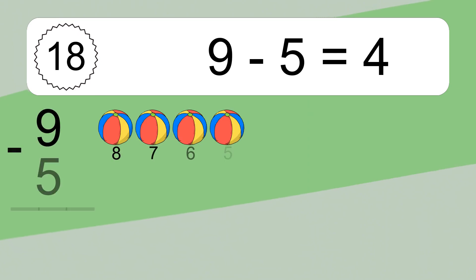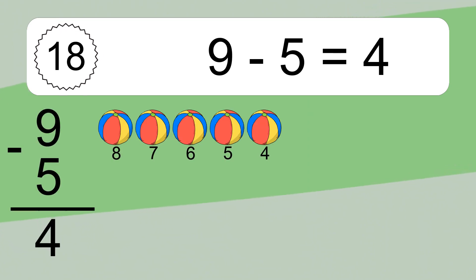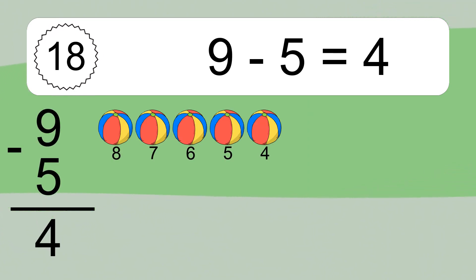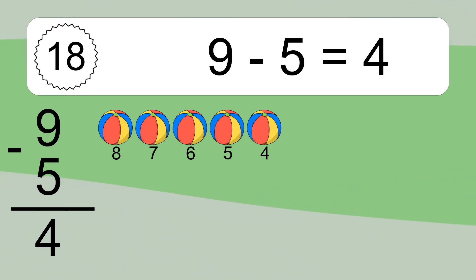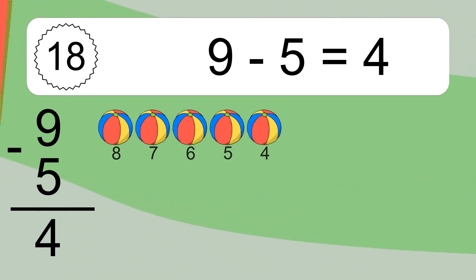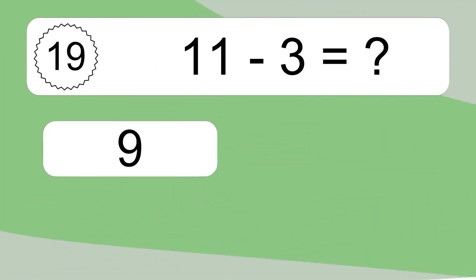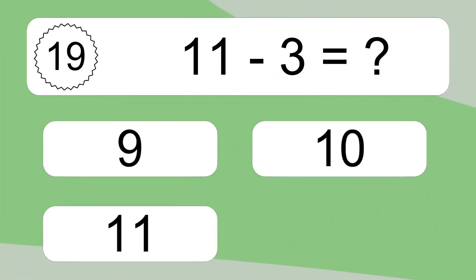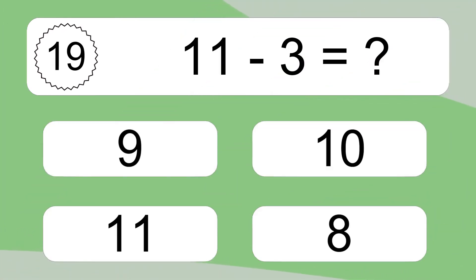9 minus 5 equals what? 9 minus 5 equals 4. Let's count it: 8, 7, 6, 5, 4.